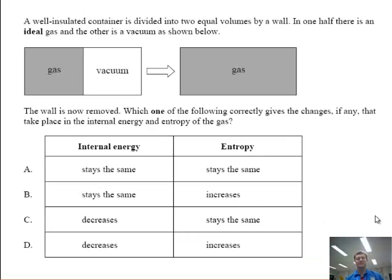So here's a question, think about what I've just said. A well-insulated container is divided into two equal volumes by a wall. In one half there's an ideal gas and the other half there's a vacuum as shown. The wall is now removed. Which one of the following correctly gives the changes, if any, that takes place in the internal energy and the entropy of the gas? Think about which answer you're going to go for. The answer's actually going to be answer B.